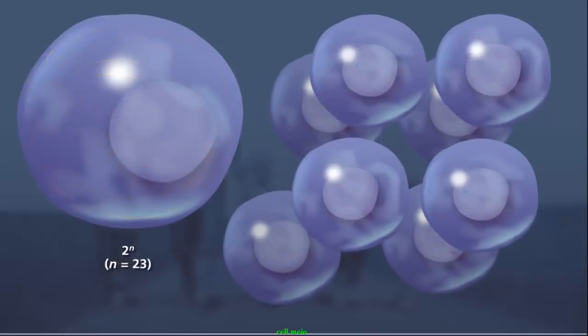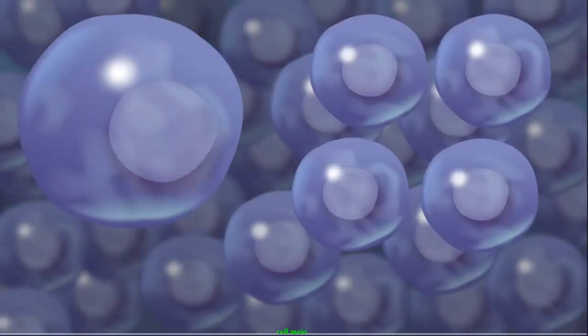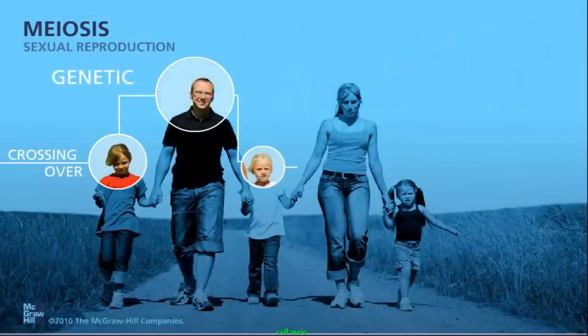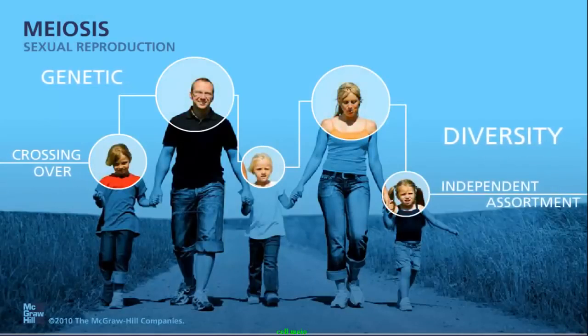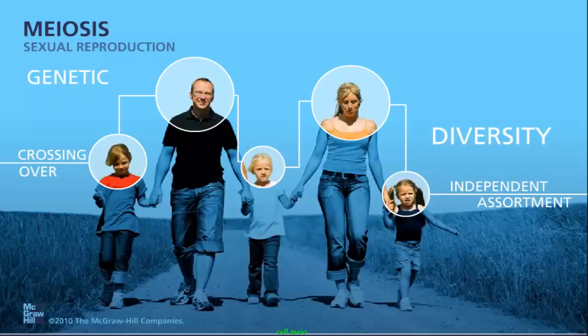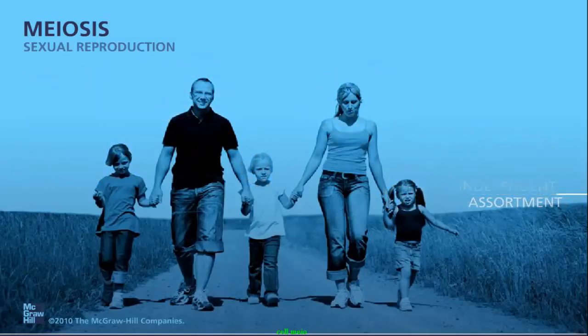For humans where n equals 23, there are 2 to the 23rd power unique gametes formed, or over a million different possible combinations. The combination of independent assortment, crossing over, and the random pairing of gametes during sexual reproduction increases genetic diversity, and explains why a child will not look exactly like his or her parents or siblings.